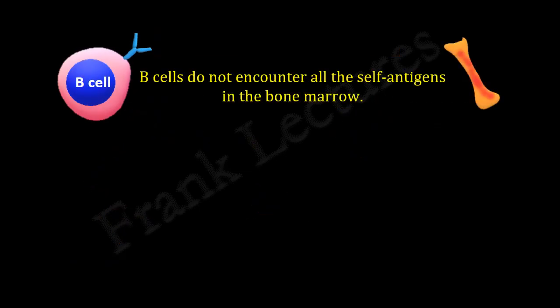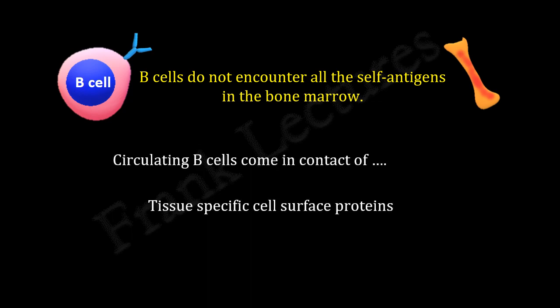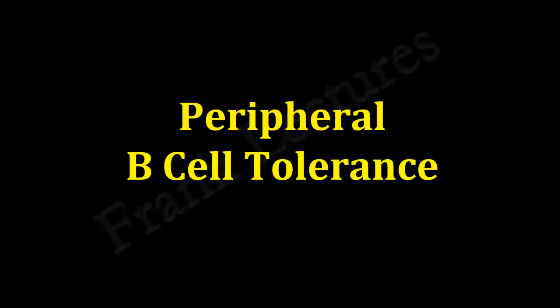But B cells do not encounter all the self-antigens in the bone marrow. Once B cells start circulating, they come in contact with tissue-specific cell surface proteins, secreted proteins, etc. Thus, autoreactive B cells that escape central B cell tolerance now enter peripheral circulation. Let's find out how peripheral tolerance prevents activation of such B cells when they encounter their specific antigens.